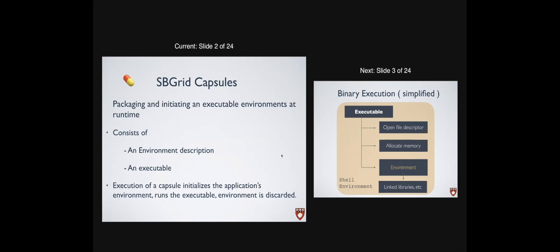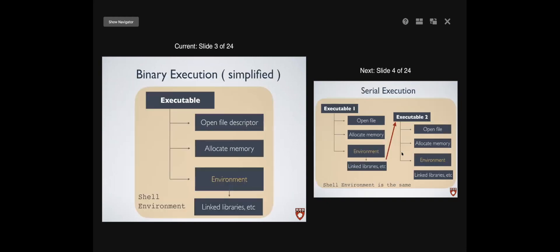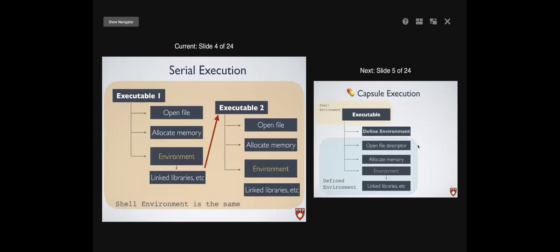This allows you to have, for example, two Python executables that have different Python path requirements — it keeps these requirements separated from each other. Typically a binary execution opens a file descriptor, allocates memory, has an environment, uses that environment for linked libraries, and runs the executable. If you run two of them serially, the environment is the same — whatever environment existed for executable one is the environment for executable two.